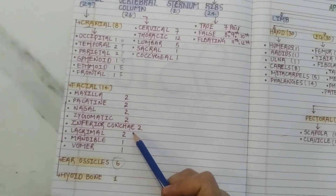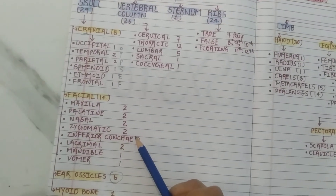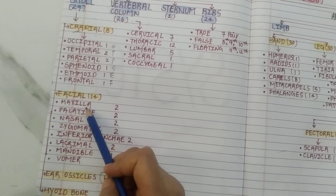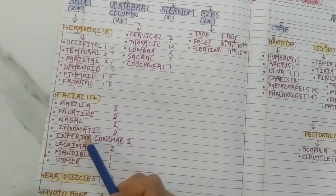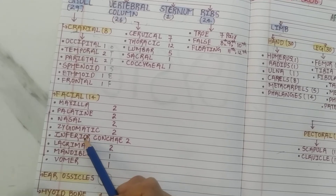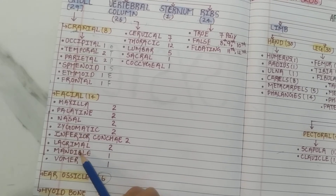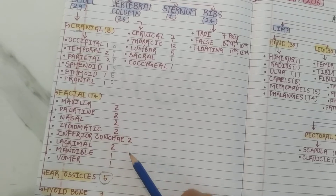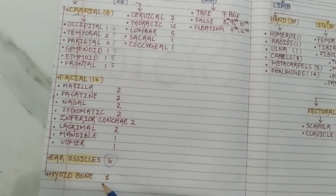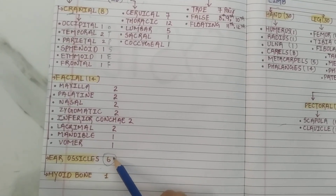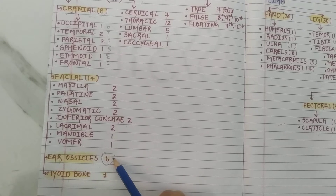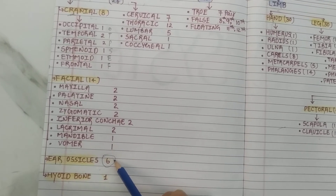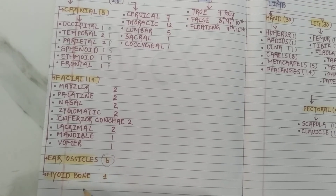Further, the skull is divided into facial bones, which are 14 bones: maxilla, palatine, nasal, zygomatic, inferior conchae, lacrimal, vomer, and mandible. The ear ossicles are 6 bones — malleus, incus, and stapes, with 3 in each ear, making 6 bones. And the hyoid bone is 1.